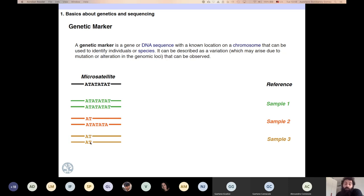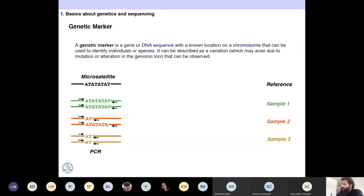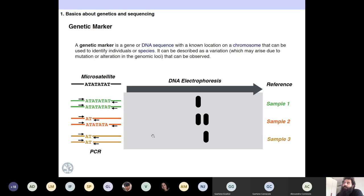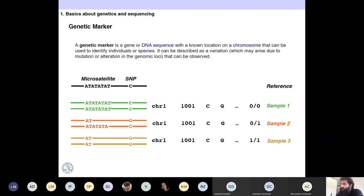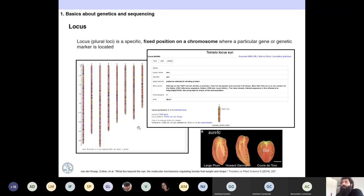If you have primers, you can design primers, do a PCR, run agarose gels, and depending on the size, you may infer that you have sample 1 or sample 2, or a heterozygote, depending on how many different alleles you are looking for. You can also have SNP markers. I will not go into much detail about that.